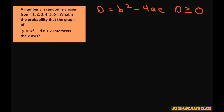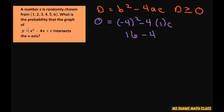So let's plug it in. Our b is negative 4, so b squared is 16. Minus 4 times a, which is 1, times c. We set this to 0, so we have 16 minus 4c, and we want this to be greater than or equal to 0.